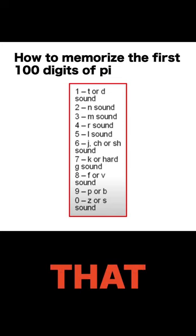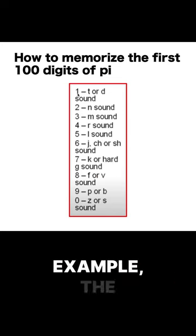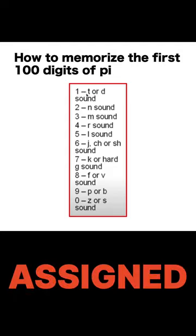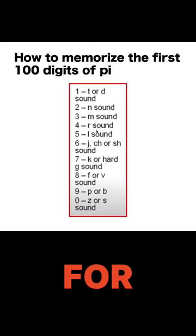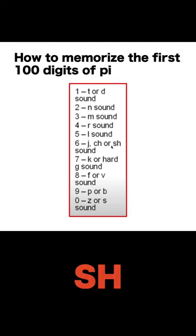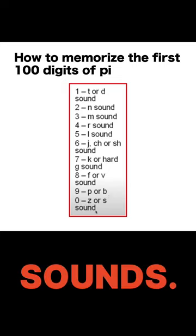This is a code that assigns a number to a sound and vice versa. For example, the number 1 is assigned to T or D, 2 for N, 3 for M, 4 for R, 5 for L, 6 for J, CH or SH sound, 7 for K or hard G sound, 8 for F or V, 9 for P or B, and 0 for Z or S sounds.